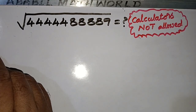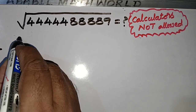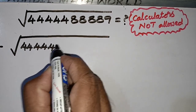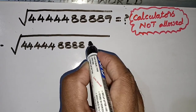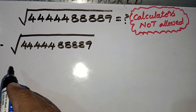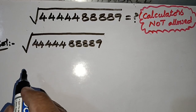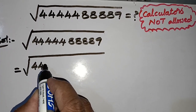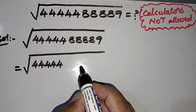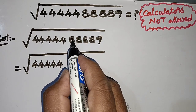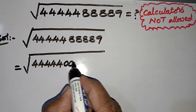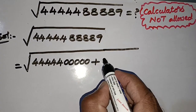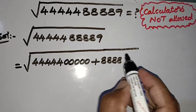So to find the square root of this number, we start the solution this way. The number is 4,4,4,4,4,8,8,8,9. First we write the 4s only — there are five 4s. And after that we write five 0s, plus the next digits which are four 8s.